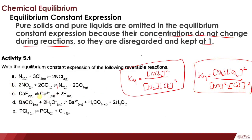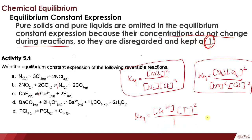For reaction 3, Keq equals [Ca²⁺]¹ times [F⁻]², over the concentration of the reactant. However, the reactant here is a solid, and pure solids are not included in the equilibrium expression because their value is kept at 1. So the denominator is just 1, and we simplify the expression to Keq = [Ca²⁺][F⁻]², disregarding the denominator.